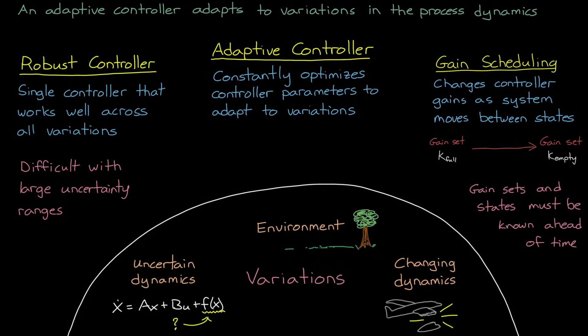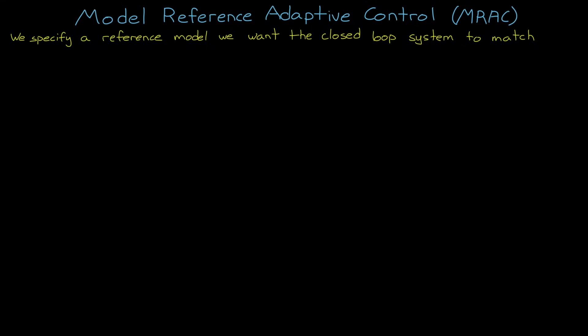So with that being said, I want to go into more detail about one particular type of adaptive controller called Model Reference Adaptive Control, or MRAC. With MRAC, we specify a reference model that we want the closed loop system to match. Let me try to explain it this way. Let's assume we have this real plant that we've modeled with this state equation.